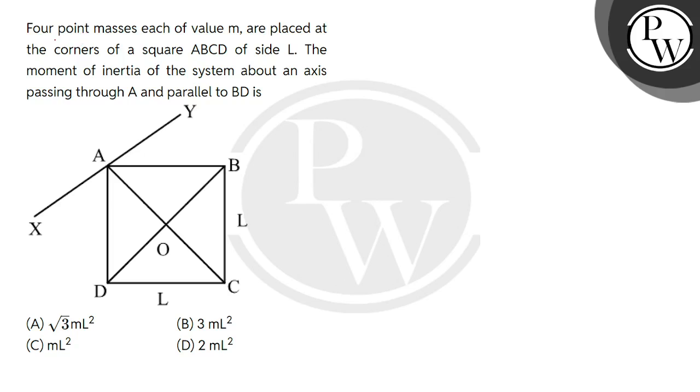Hello, let's read the question. Four point masses, each of value M, are placed at the corners of a square ABCD of side L. The moment of inertia of the system about an axis passing through A and parallel to BD is.